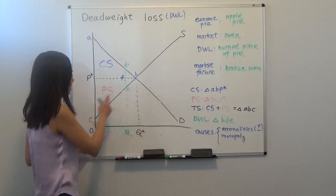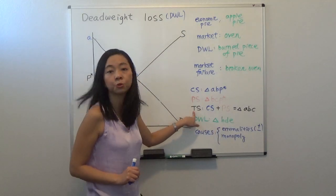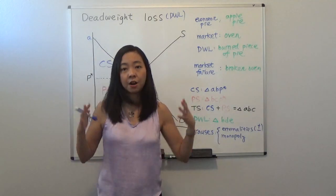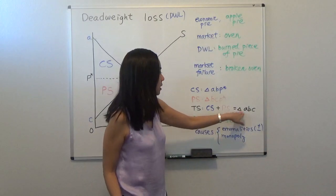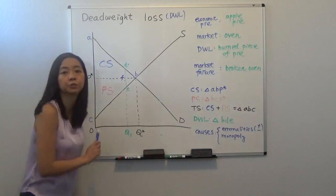So the whole thing, consumer surplus plus producer surplus will be our total surplus. That will be the entire economic pie. And that triangle ABC. So that big triangle is our total surplus.